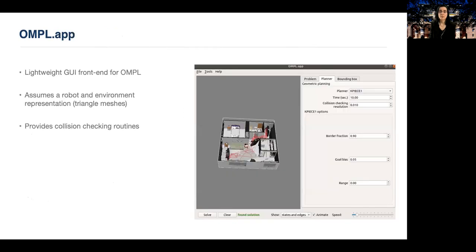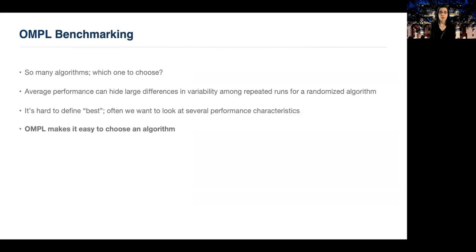An easy way to explore the library is through OMPL app, a lightweight interface to the library. It assumes a robot and an environment representation as triangle meshes and provides collision checking routines. There are many sampling-based algorithms, and OMPL implements many of these.